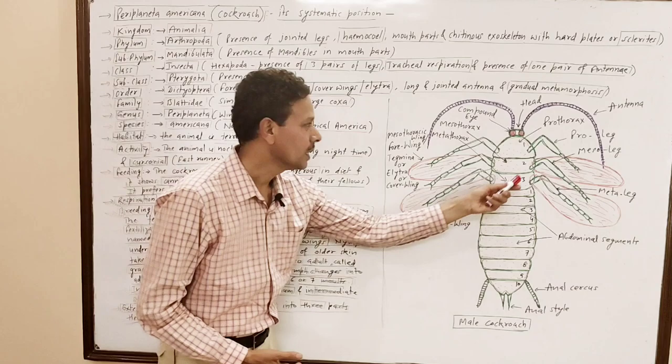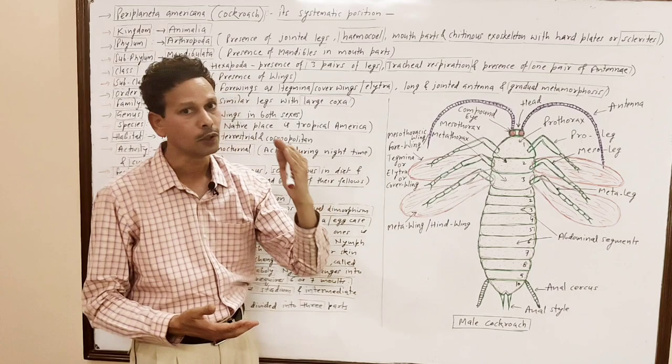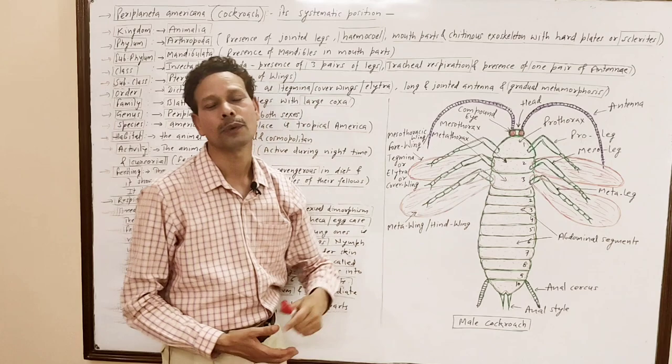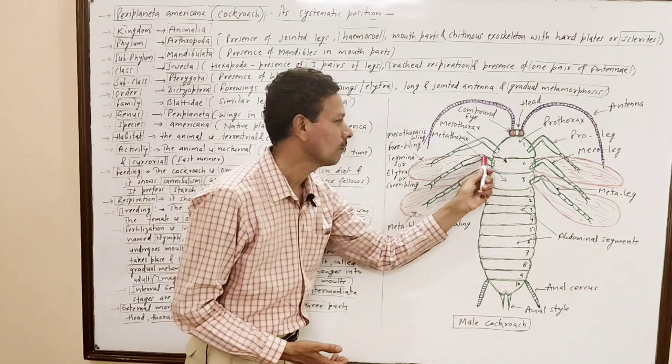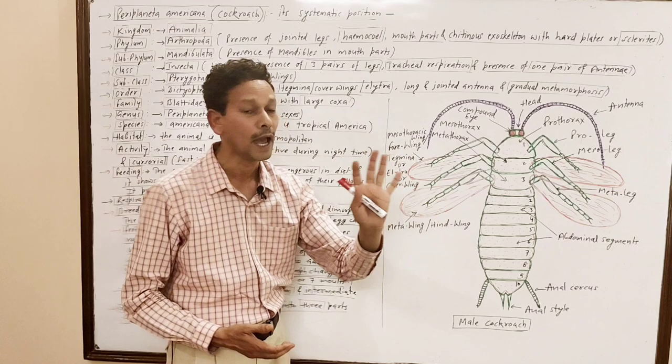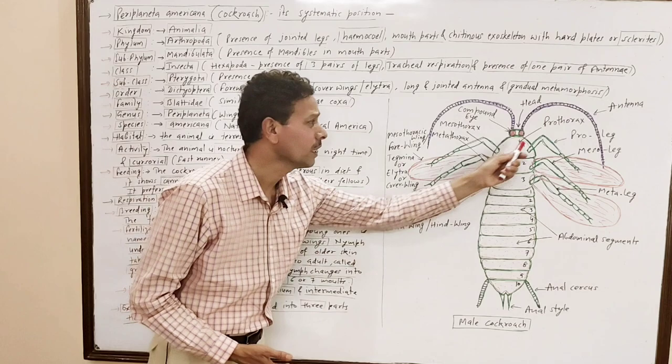The middle part of the body, the thorax, is further divided into three sub-segments: prothorax, mesothorax, and metathorax. On each thoracic segment, a pair of legs is present. The cockroach has three pairs of jointed legs, as clearly shown in the diagram.